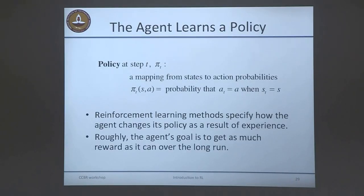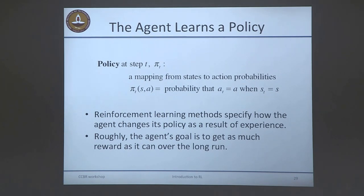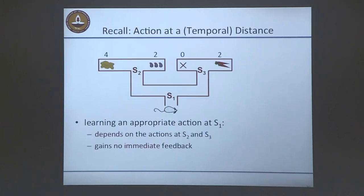The goal of the agent is to learn a policy pi_t — a mapping from states to actions, or more generally a distribution over actions, because we want to do exploration. A stochastic policy allows exploration rather than always taking the same action. Reinforcement learning methods specify how the agent changes its policy as a result of experience from the world: seeing transitions, rewards, and next states. Roughly, the agent's goal is to get as much reward as possible.